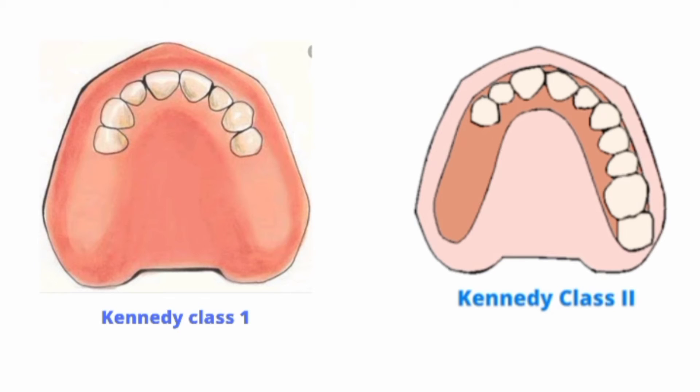It is used in distal extension cases like Kennedy's Class 1 and Class 2. In Kennedy's Class 1 and Class 2, we will see the posterior edentulous areas. In these posterior edentulous areas, we will fabricate the custom tray material under rest.